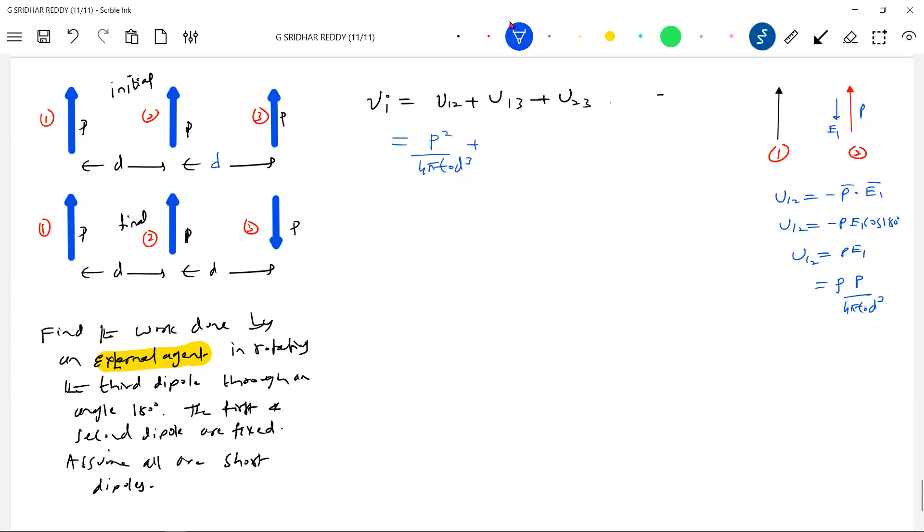And what change you are going to make? Only in place of d³ it will come 2d³. So the interaction potential between one and three, how much it should be equal to? U by 8, 2d³.